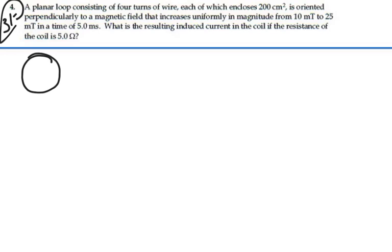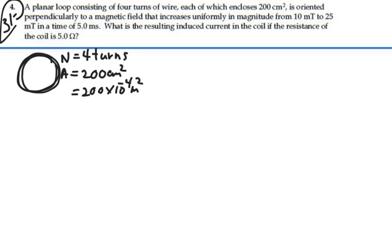So we have a planar loop. Our number of turns is 4. And the area of a particular turn is 200 square centimeters, which would be 200 times 10 to the minus 4 square meters, which we could write as 2 times 10 to the minus 2 square meters.